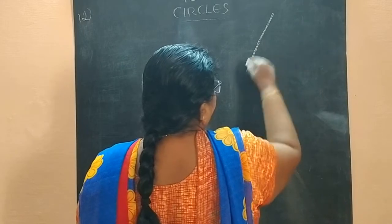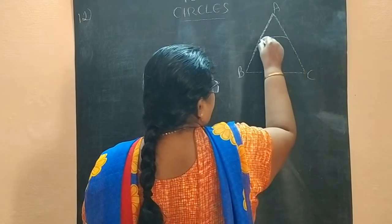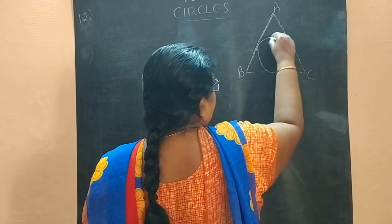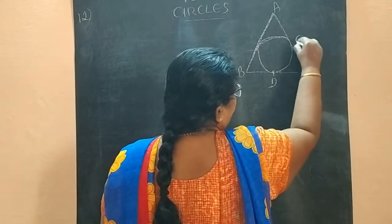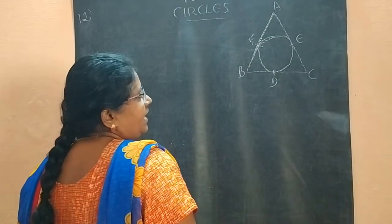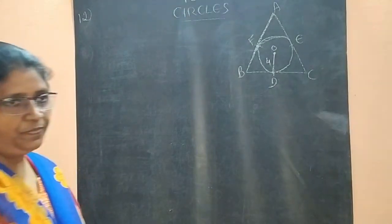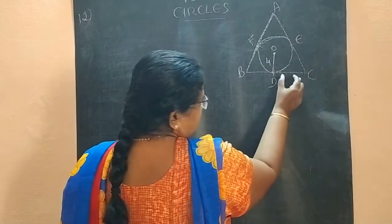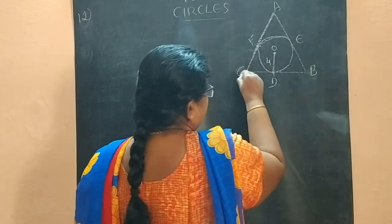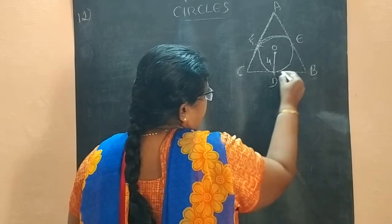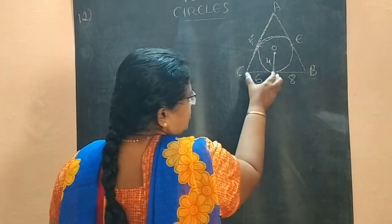A triangle ABC circumscribes the circle. Circumscribes means the three sides touch the circle at points D, E and F. Radius of the circle is given as 4. The length of the line segments CD and BD are given. BD is 8 cm and CD is 6 cm — this part 8, this part 6.